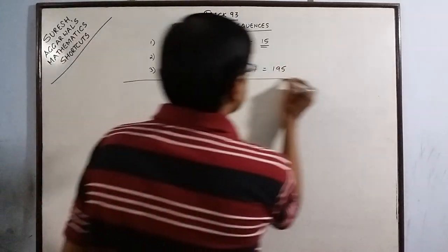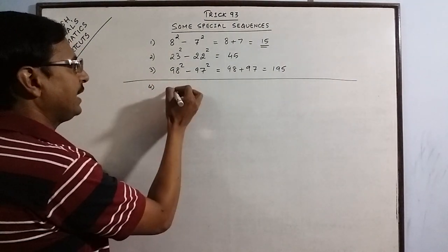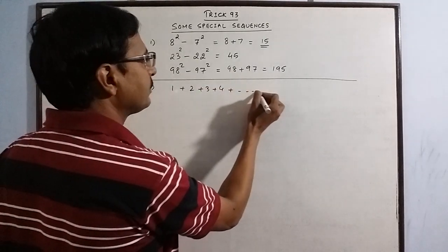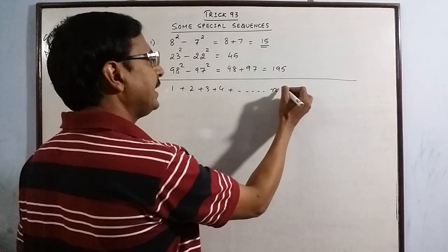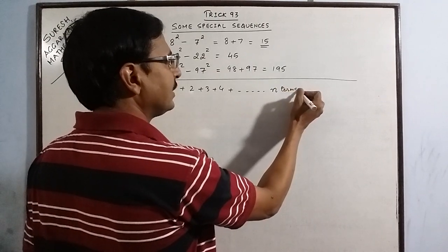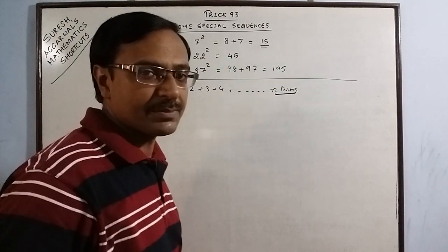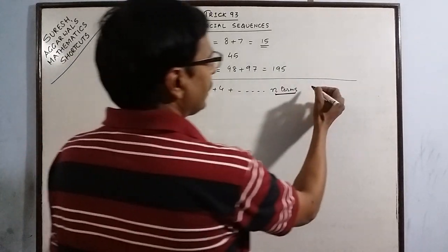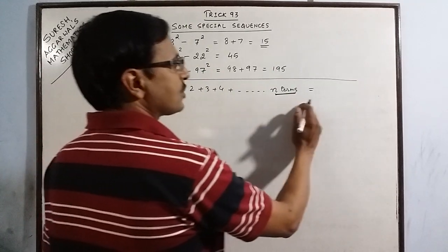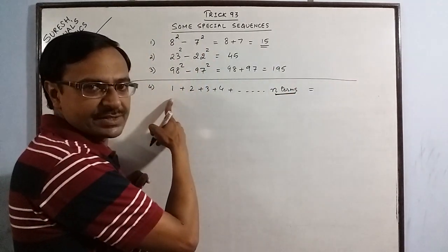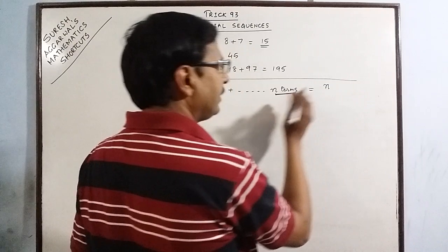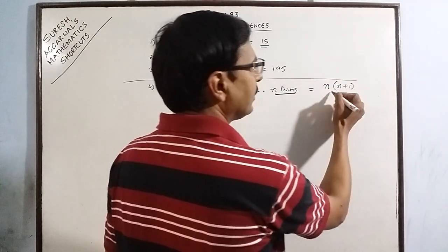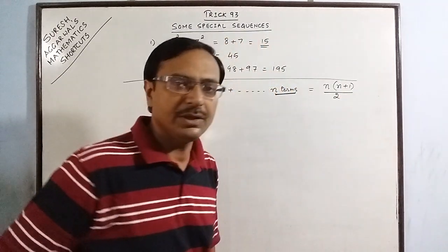Now let's come to some special sequences. Say we have natural numbers 1, 2, 3, 4 and so on up to n terms. n can be any natural number — say 100 terms, 50 terms, 150 terms, 2000 terms, 1 lakh terms and so on. You can find the sum of all these natural numbers starting from 1 using the formula: n multiplied by its consecutive natural number (n+1), divided by 2.